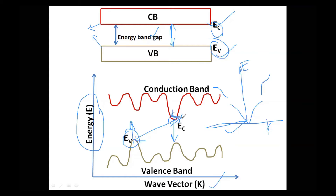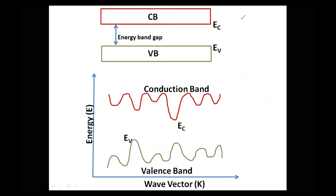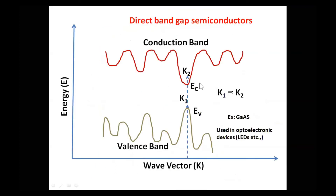There are materials where K1 equals K2, meaning the bottom of the conduction band coincides with the top of the valence band. There are also materials where the bottom of the conduction band does not coincide with the top of the valence band. Depending upon the position of the bottom of the conduction band and the top of the valence band, we have two different types of semiconductors. The first one is the direct bandgap semiconductor.